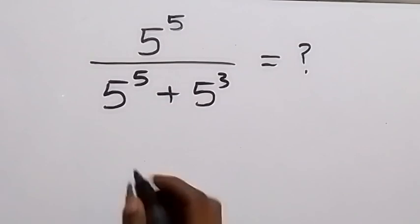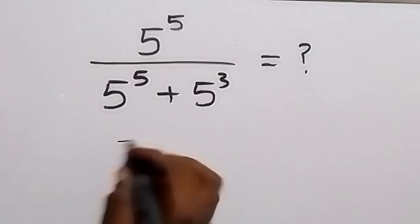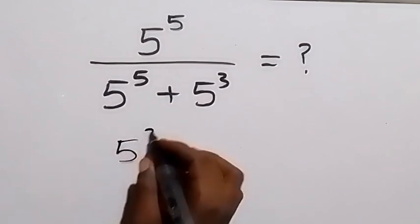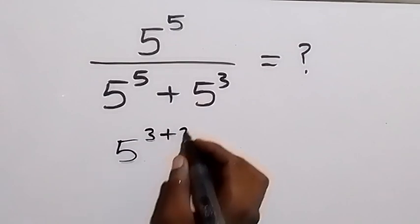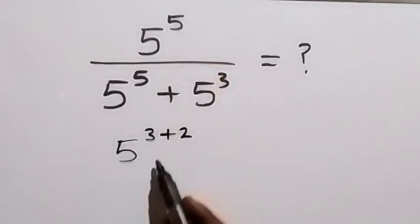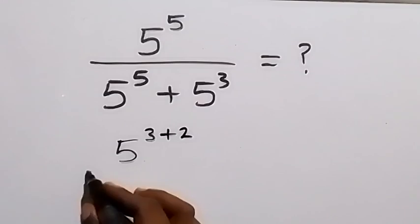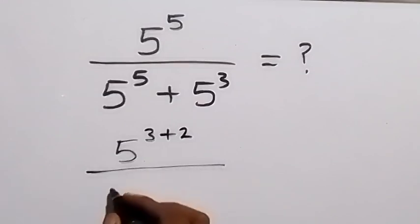We say this is 5 raised to power 3 plus 2, because 5 here can be split as 3 plus 2. Then divided by, also from here we can say this is 5 raised to power 3.